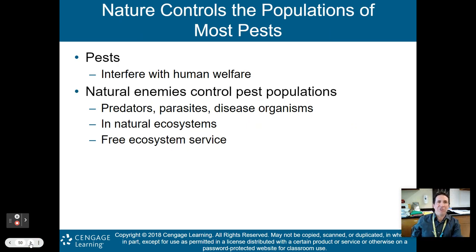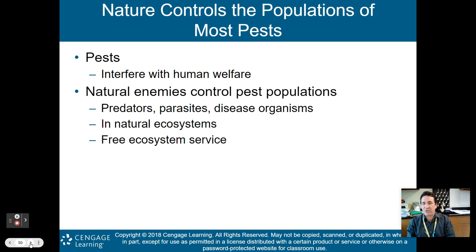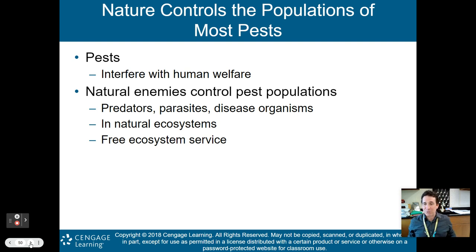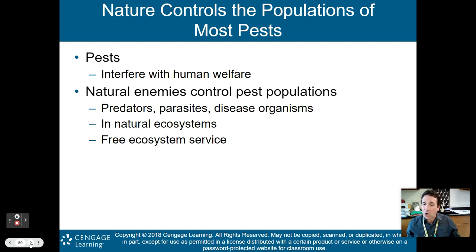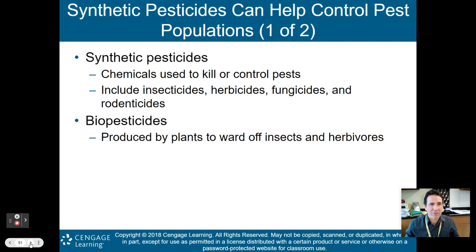Let's talk about this in more detail. Nature controls the population of most pests — any organism, usually insects, that interferes with human welfare. Natural enemies control pest populations: these are predators, parasites, and disease organisms present in natural ecosystems. They're free ecosystem services. When a predator eats a pest, that's an ecosystem service the Earth is providing to human beings. We have a pest we don't like, a predator comes and eats it — that's an ecosystem service.